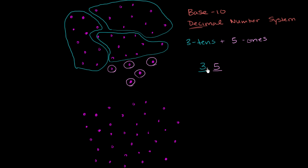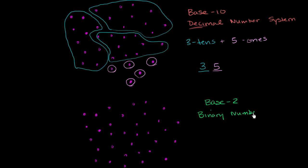But this is just representing it in a decimal number system — we've gotten used to this, but this is just one of really an infinite number of number systems. Now let's do the same thing with the same cluster, but let's do it in base 2, where we can only represent it with two different digits. In base 10 you have 10 different digits to play with. You could call this a binary number system — you only have two digits.